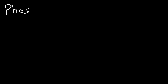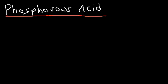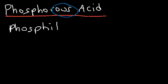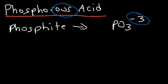Let's try another example: phosphorous acid. What is the formula? We can see the suffix '-ous', so we know it's associated with phosphite. The formula for phosphite is PO₃³⁻. So we have to add 3 hydrogens to it. The formula is going to be H₃PO₃.